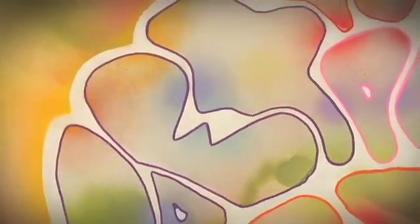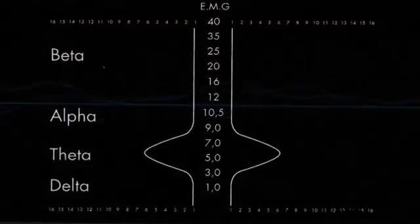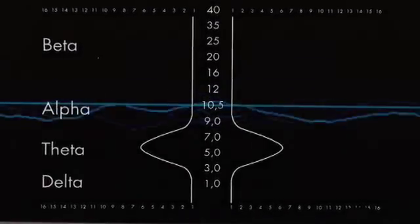And then, if your brain waves slow even more, you go into a theta brain wave pattern, which is between 4 and 8 cycles per second.